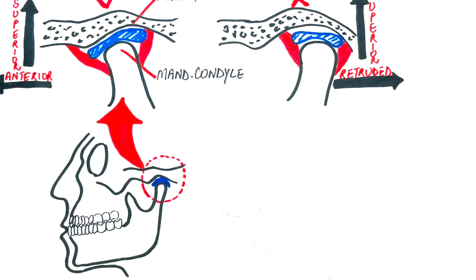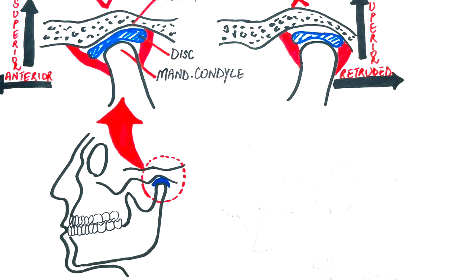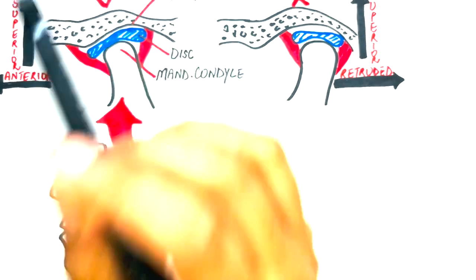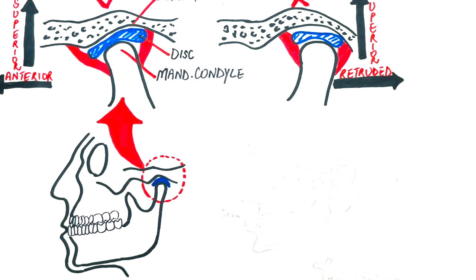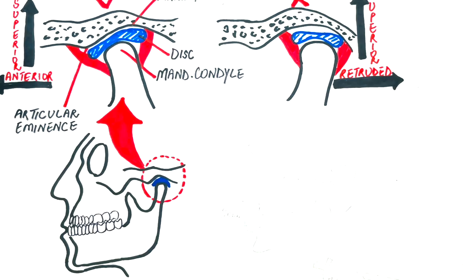The joint cavity is divided into an upper and lower joint cavity by the inter-articular disc. Anterior to the glenoid fossa is the articular eminence of the temporal bone. The articular eminence has an anterior and a posterior slope.